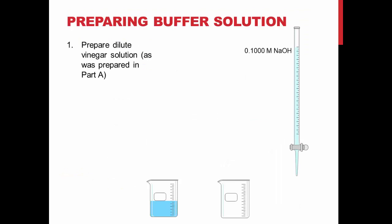To prepare a buffer solution, you will first need to make a dilute vinegar solution the same way you did in Part A of this experiment. Pipette 10 mL of the provided vinegar solution into a 100 mL volumetric flask and dilute to the mark with deionized water.